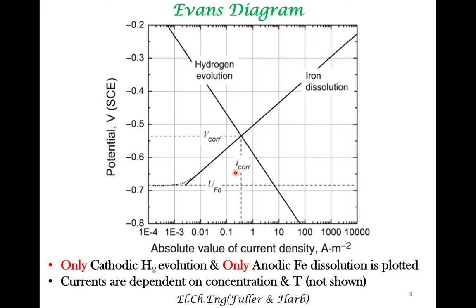The currents are dependent on the concentration of the relevant species, which is not indicated in the diagram. And of course, they are dependent on temperature and pressure, which is also not shown in a typical Evans diagram.